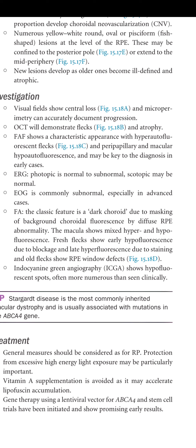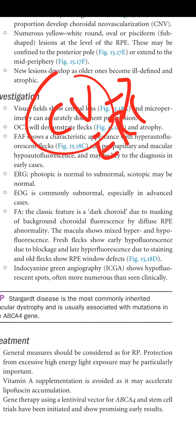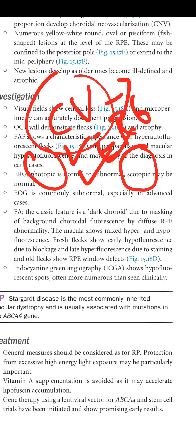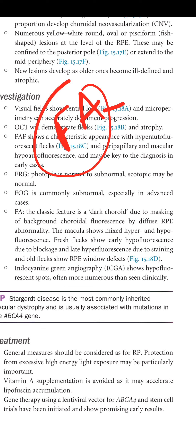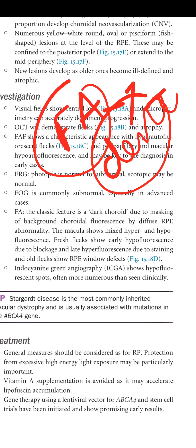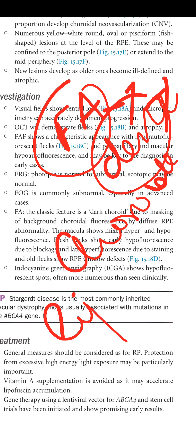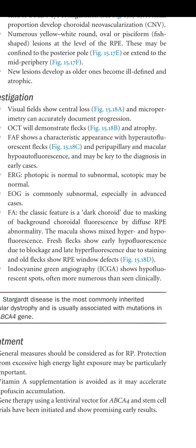ERG: photopic is normal to subnormal; scotopic may be normal, reflecting that central vision is primarily affected. EOG is commonly subnormal, especially in advanced cases. Fluorescein angiography (FA) shows a classic dark choroid, because the underlying choroidal fluorescence is masked by the lipofuscin within the RPE.